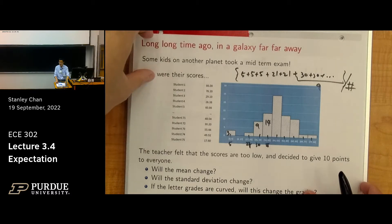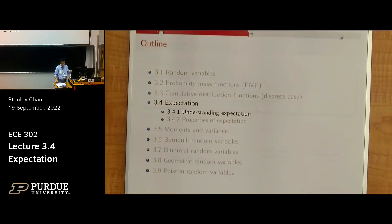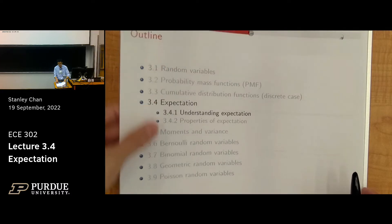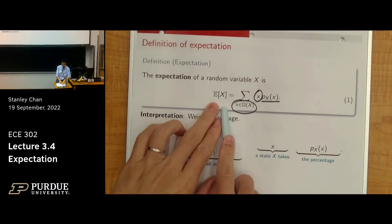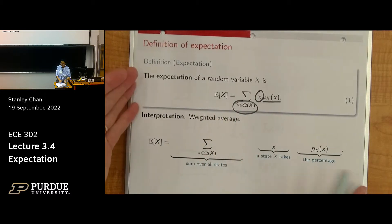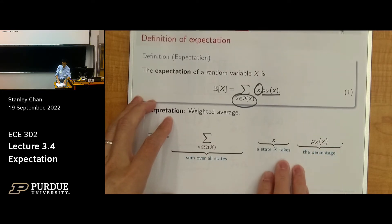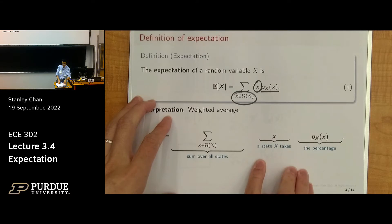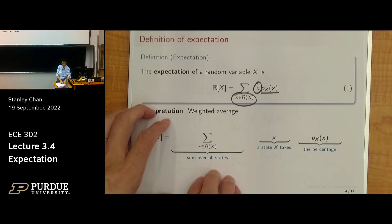The concept of expectation is exactly the same. Now, instead of having this histogram, you have the probability mass function. For discrete random variables, they are essentially just different stamps and you count the height of the stamps and the state of each stamp. The definition of expectation has three parts: the percentage, which is p(x); the states, which is x; and the summation, which sums over all possible cases in your sample space.